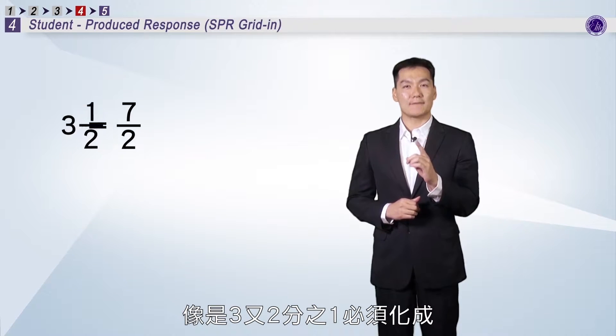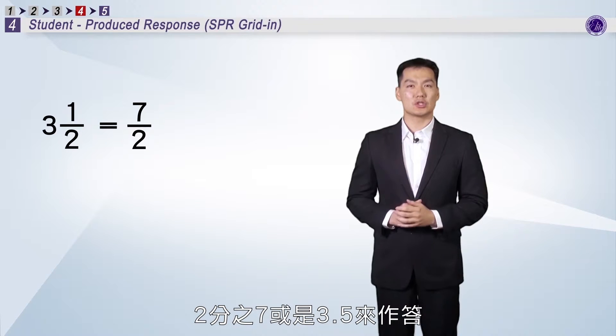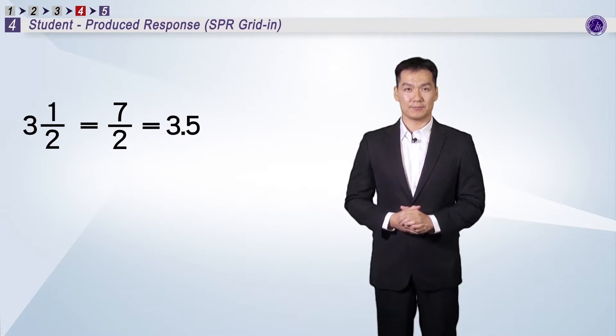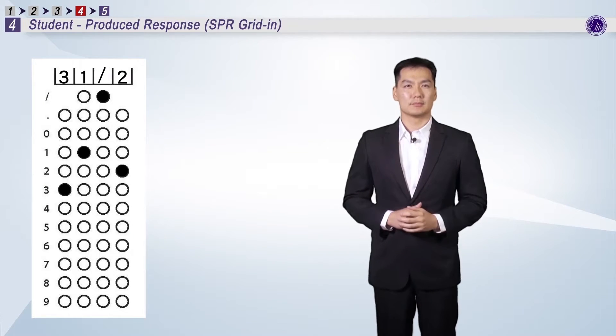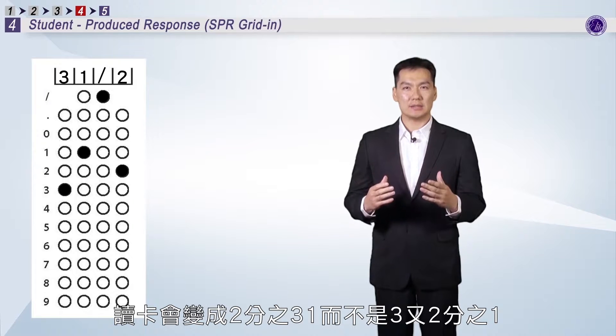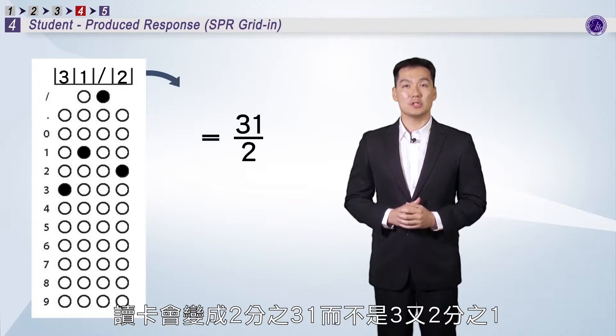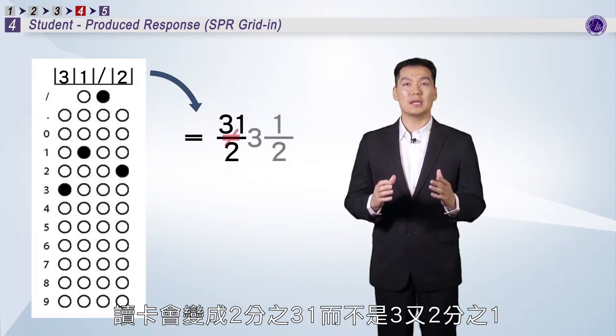3.5 needs to be converted into 7 over 2 or 3.5. If the answer is marked 3, 1 slash 2, then the computer will read the answer as 31 over 2, not 3.5.